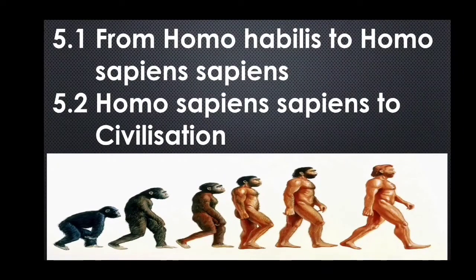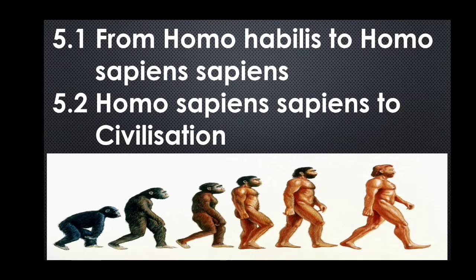In this lesson, we have to complete the following subtopics. 5.1: From Homo habilis to Homo sapiens sapiens. 5.2: Homo sapiens sapiens to Civilization. These are the two subtopics we have to complete in Chapter Number Five.